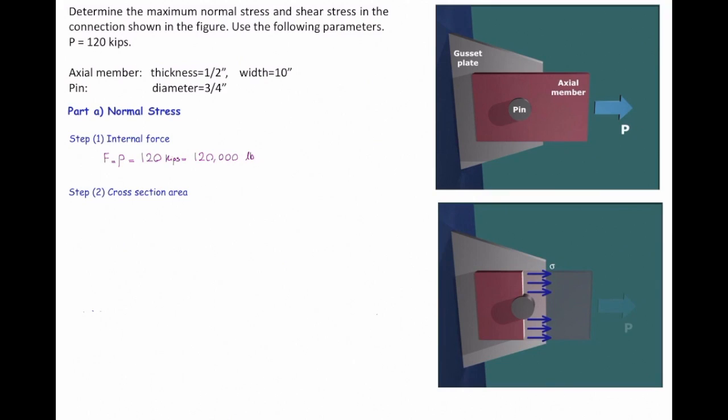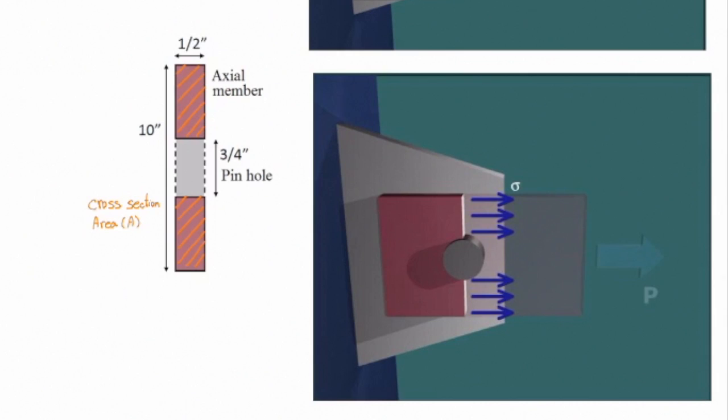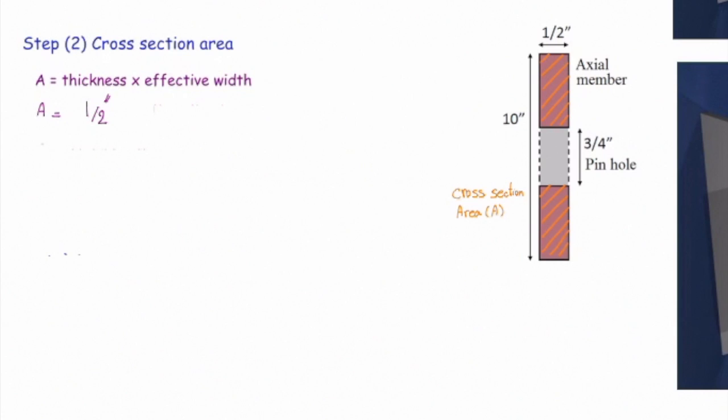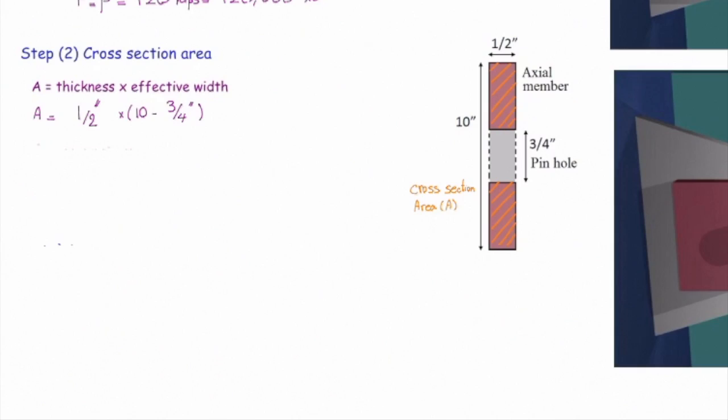What area should I consider in my calculation? Let me look at that from front view. If I look at that from front view, I would see this. Should I consider the entire area of that red element, or should I subtract the hole from that? You should subtract it. So I will consider the hatched area or the red area. That would be simply thickness times the effective width. Effective width is the width minus the hole. The thickness is half inch, and the effective width is 10 inch minus three quarter of inch. So that gives me 4.625.